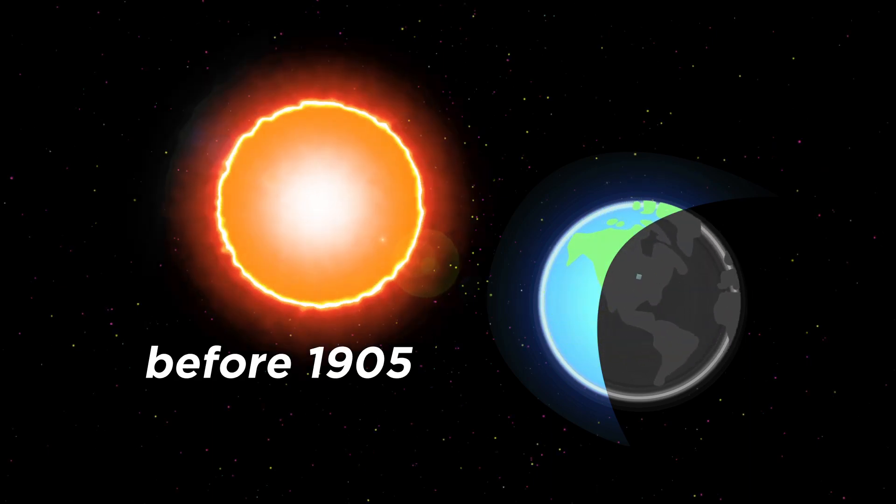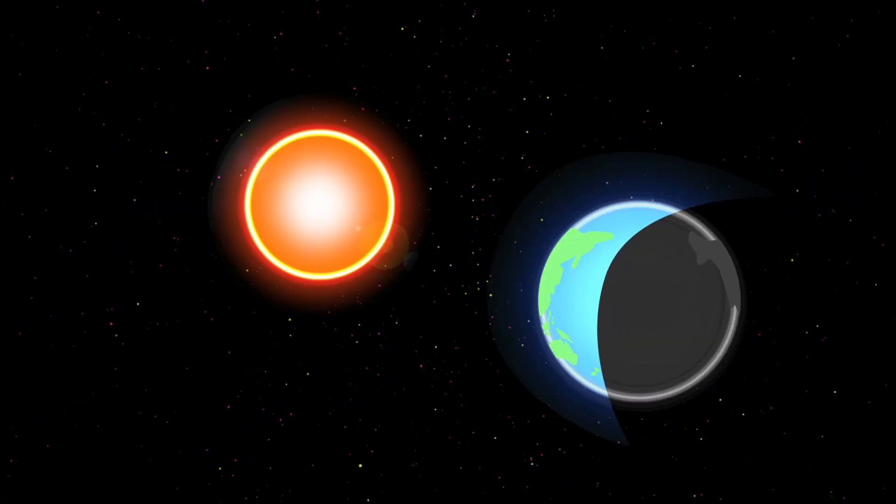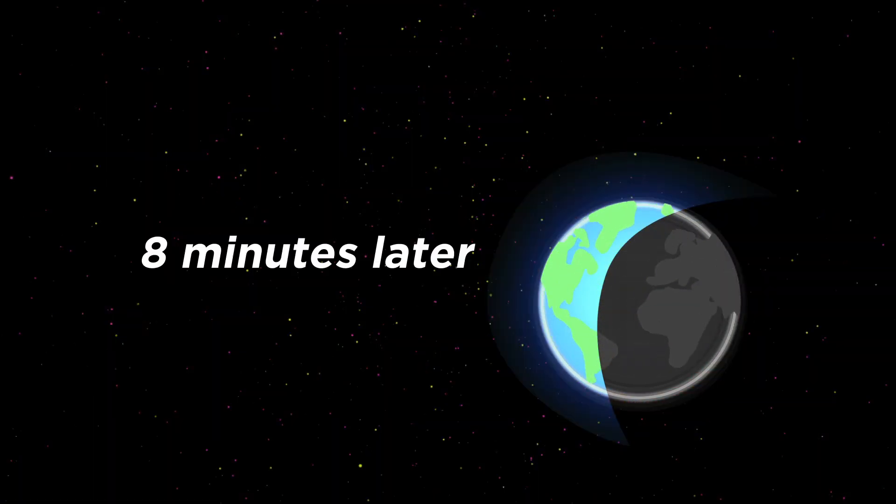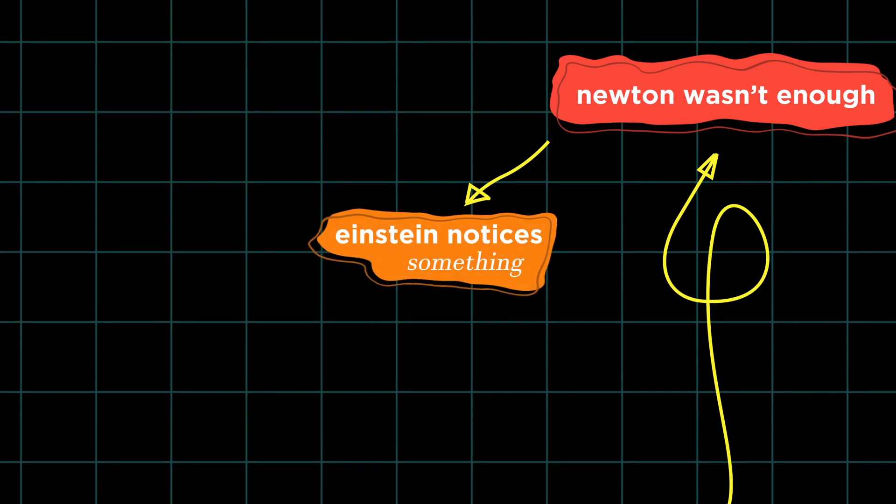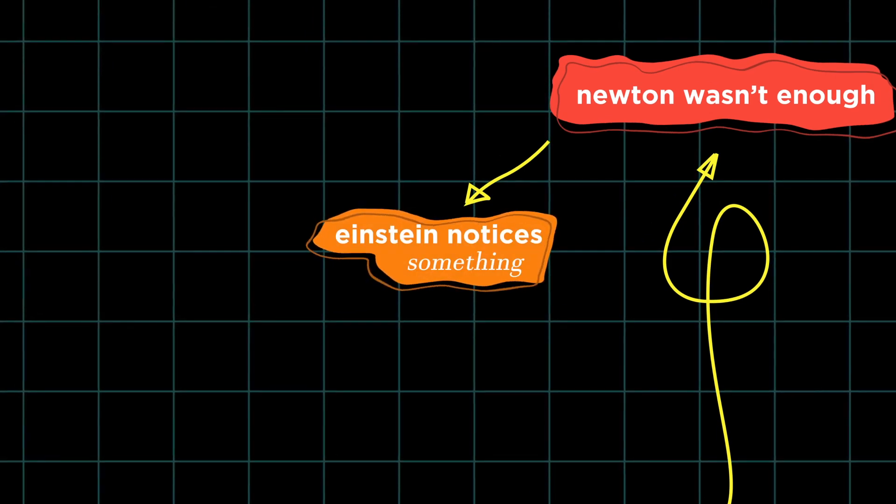Because before 1905, we thought if the sun exploded or something, we'd feel its effects at the same time. But Einstein's light travels at a fixed rate rule meant that light from the explosion would have to take about eight minutes to reach us. Einstein was one of the people working on an updated theory of gravity and he noticed something from the other new theories that the other scientists didn't really consider much of an issue.